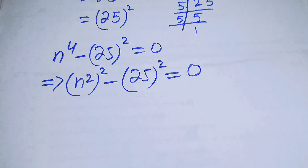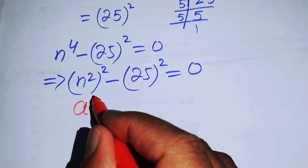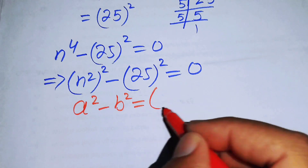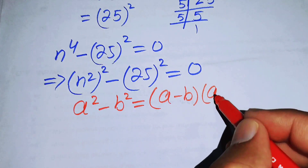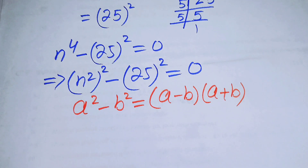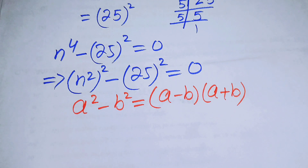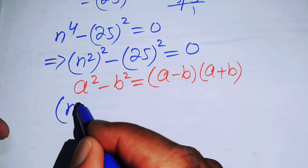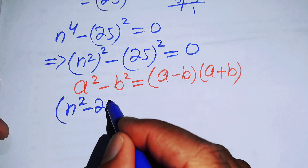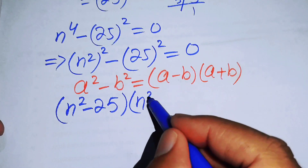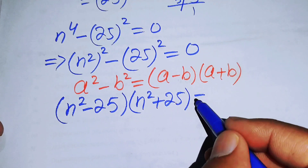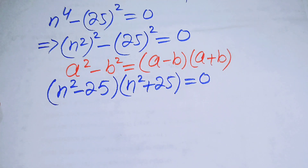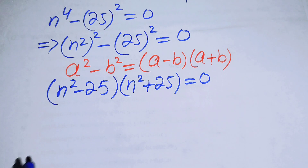Now we can use the difference of squares formula: a squared minus b squared equals a minus b times a plus b. Applying this formula, the expression becomes n squared minus 25 times n squared plus 25 equals 0.